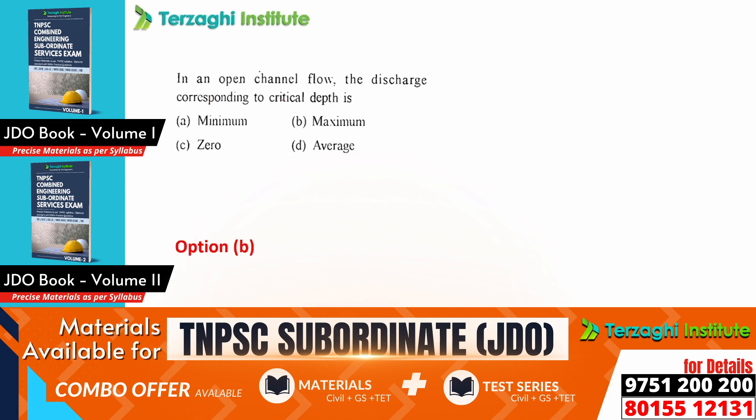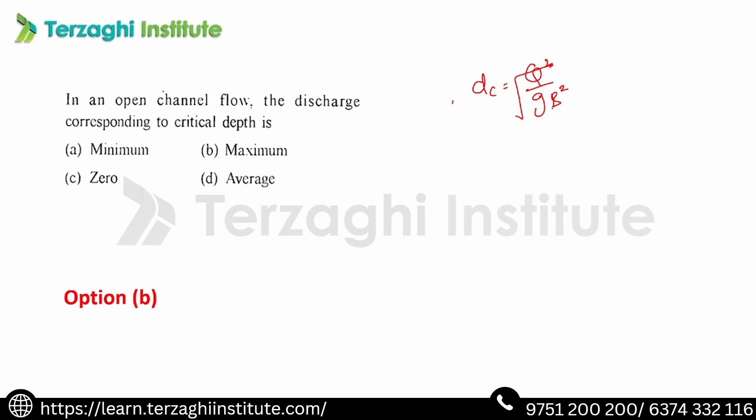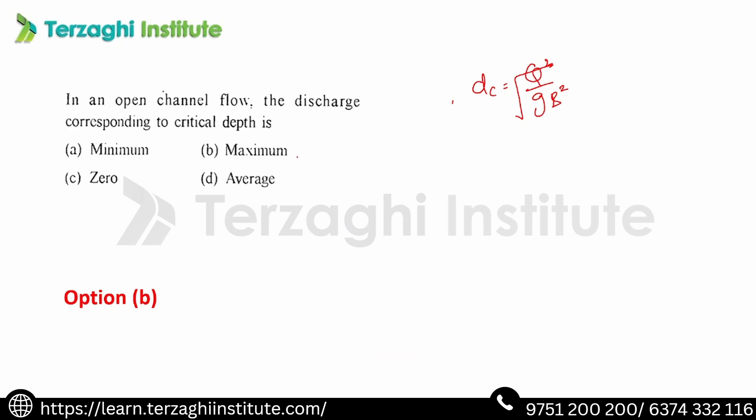In an open channel flow, the discharge corresponding to critical depth: critical flow is the condition where the Froude number equals unity. Specific energy and specific force are minimum for a given discharge. For a given specific energy or specific force, discharge is maximum. Therefore, discharge at critical depth is maximum.